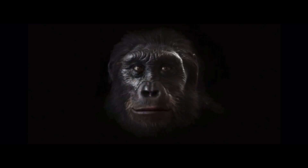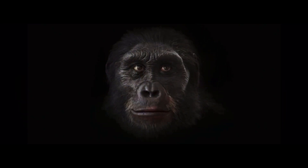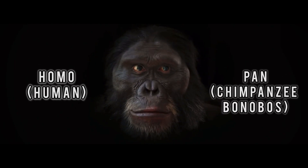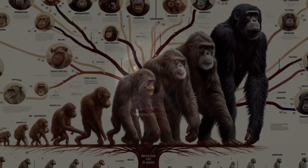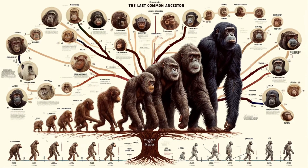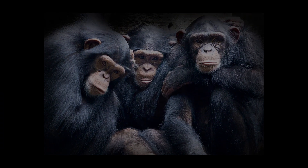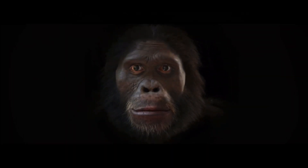The chimpanzee-human last common ancestor is the last common ancestor shared by the extant Homo and Pan genera of Hominini. Estimates of the divergence date vary widely, from 13 to 5 million years ago. In human genetic studies, the chimpanzee-human last common ancestor is useful as an anchor point for calculating single nucleotide polymorphism rates in human populations, where chimpanzees are used as an outgroup — that is, as the extant species most genetically similar to Homo sapiens.